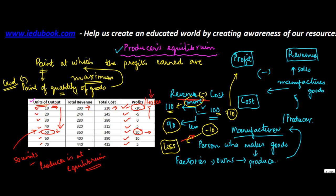Now if you were the producer, would you manufacture 60 units of goods? The answer is no, because if you increase the quantity of production, the profit goes down. Similarly, you would also not manufacture 40 because even at 40 the profits are less. So a producer is always going to manufacture 50 units of goods where he earns the maximum profit of 20. Producer's equilibrium is the point when the profits are maximum.